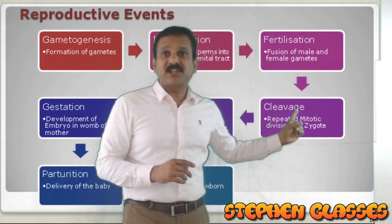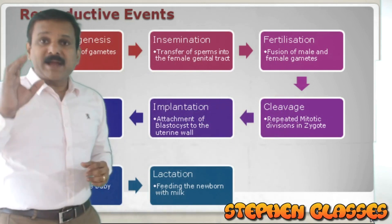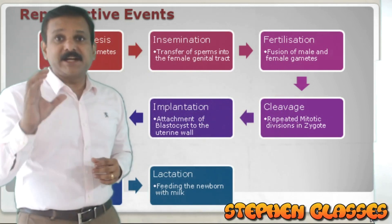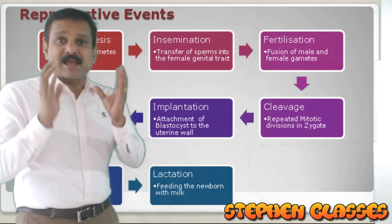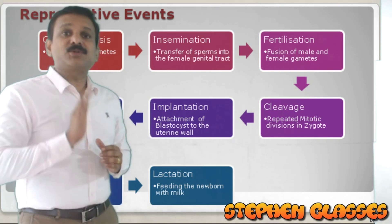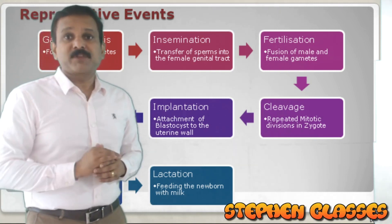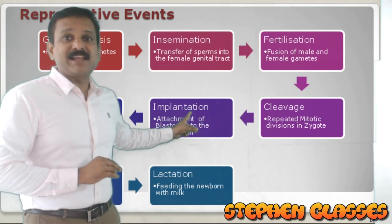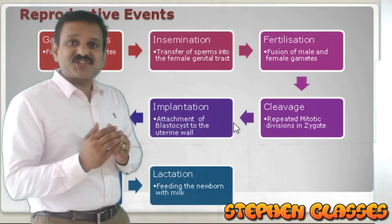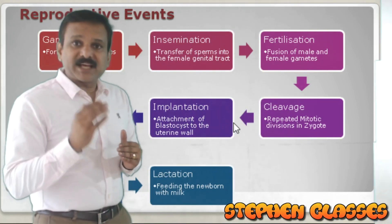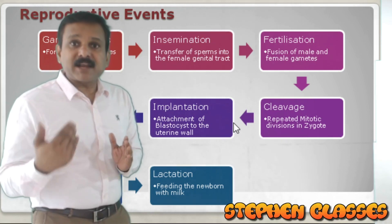The fourth event is implantation. When the embryo is at the 32-cell stage, it is called a blastocyst. That blastocyst will attach onto the uterine wall, and that step is termed implantation. So attachment of the blastocyst onto the uterine wall is known as implantation.